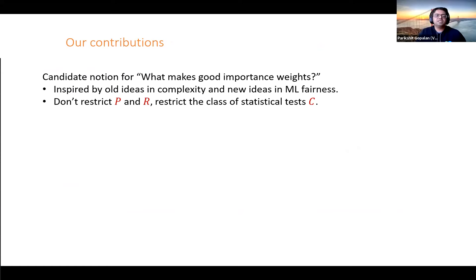So what do we try to do in this work? We ask what constitutes good importance weights, and we put forward a candidate notion for when importance weights are good. Our notion is different from the existing literature. It's inspired by classical notions like indistinguishability in complexity theory, and some very recent work in the machine learning fairness literature that Michael Kim just talked about. One important thing is that we don't want to restrict the distributions P and R in any way.